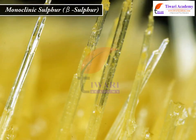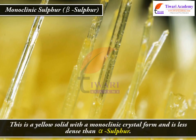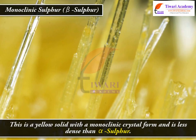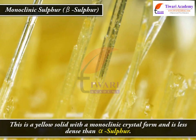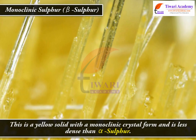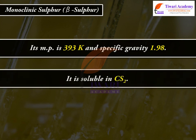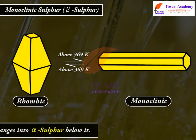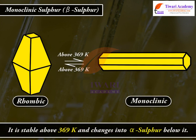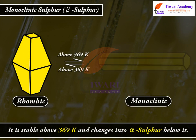Monoclinic Sulphur — Beta Sulphur. This is a yellow solid with a monoclinic crystal form and is less dense than alpha sulphur. Its melting point is 393 K and specific gravity is 1.98. It is soluble in CS2. It is stable above 369 K and changes into alpha sulphur below it.